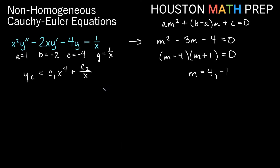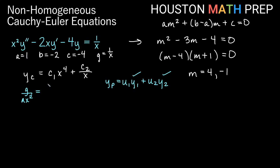With variation of parameters, our yp equals u1 y1 plus u2 y2, where y1 is x to the 4 and y2 is 1 over x from our complementary function. Before computing the Wronskians, we divide through by ax squared. Taking g divided by ax squared — that's (1/x) divided by x squared — gives us 1 over x cubed, or x to the negative 3. That value is what goes into our W1 and W2.